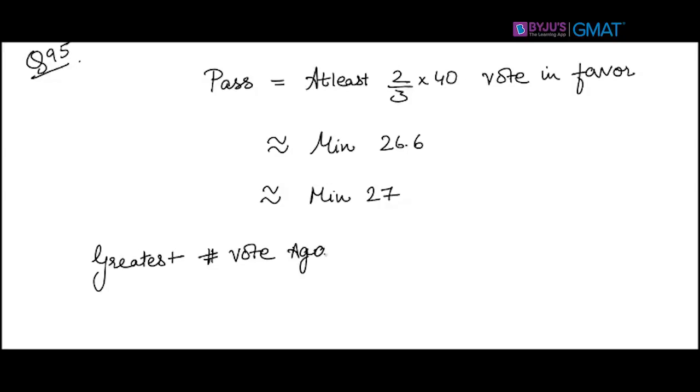And yet the resolution will pass. If the minimum is 27, clearly the maximum number of members who could vote against will be 40 minus 27, or rather 13. So maximum 13 members can vote against such that the resolution will still pass, and that's answer option E.